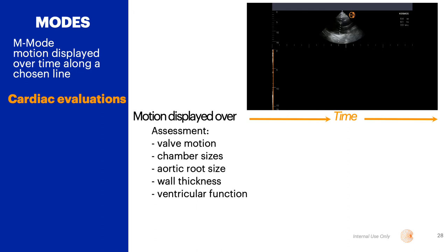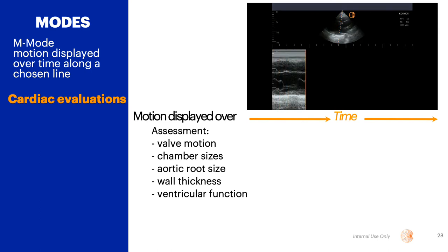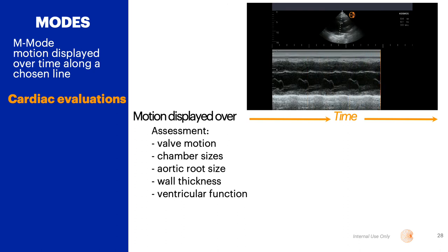The next is M mode, or motion over time along a chosen line. M mode is often used in cardiac assessments to allow quantitative measurements of valve motion, chamber sizes, aortic root size, wall thickness, ventricular motion, and more.